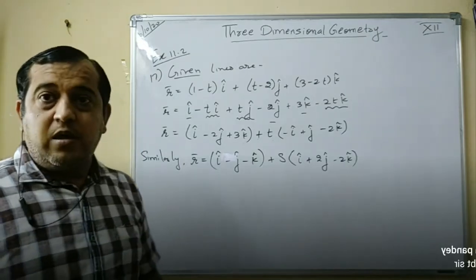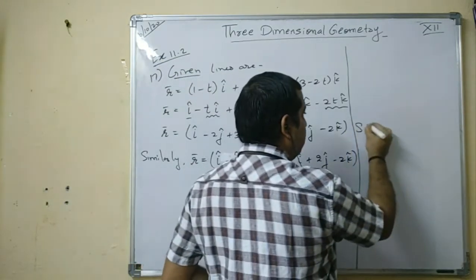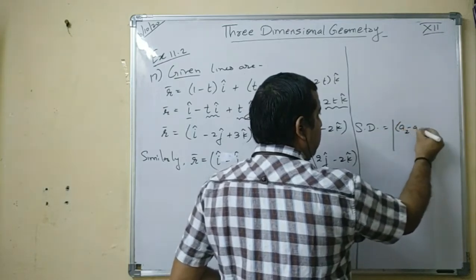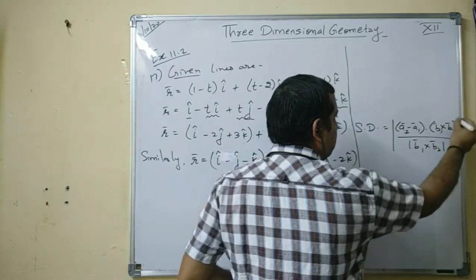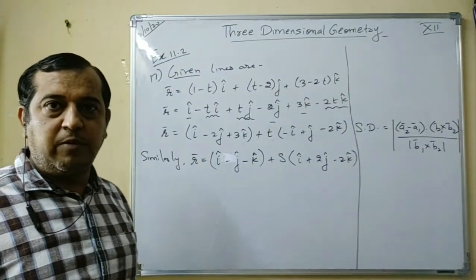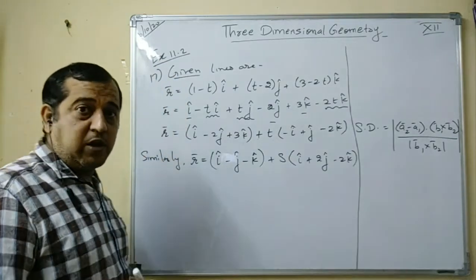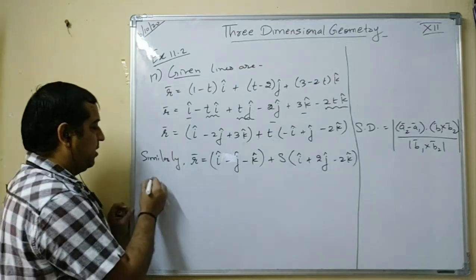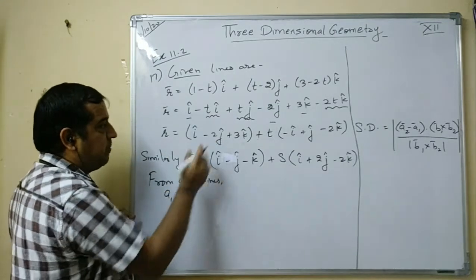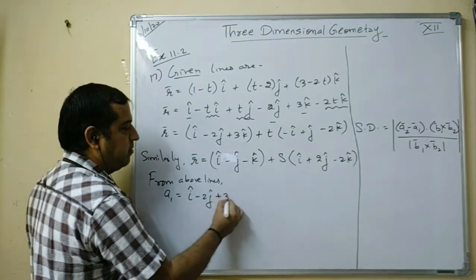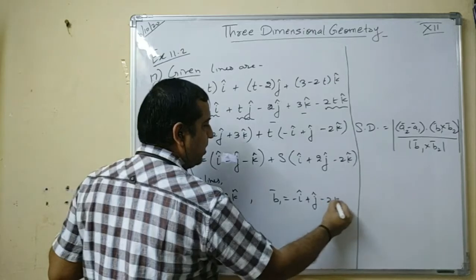Shortest distance is very easy. The formula for shortest distance is: (a2 - a1) · (b1 × b2) / |b1 × b2|. You need a1, b1, a2, b2. From the first line, a1 = i-cap - 2j-cap + 3k-cap, and b1 = -i-cap + j-cap - 2k-cap.